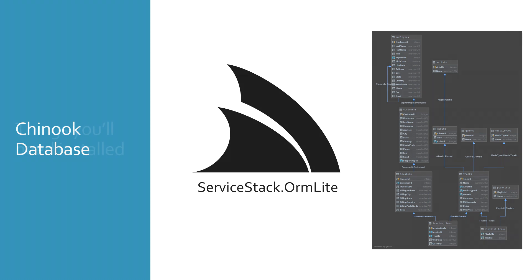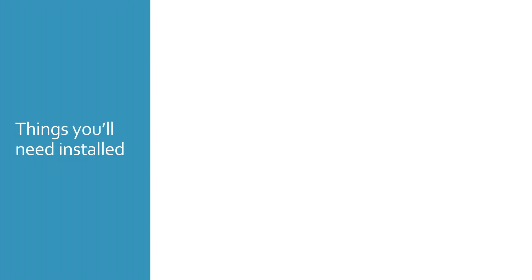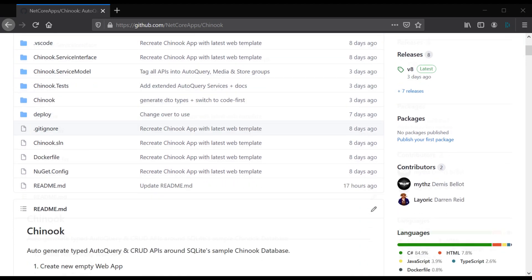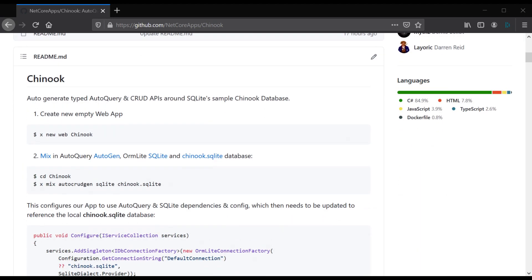Before getting started building our application there are a few things you'll need to install to follow along: the .NET SDK 5.0 or higher, the ServiceStack X tool, and Docker and Docker Compose for setting up deployments. The full application and write-up can be found on GitHub under netcore-apps/Chinook — link in the description.